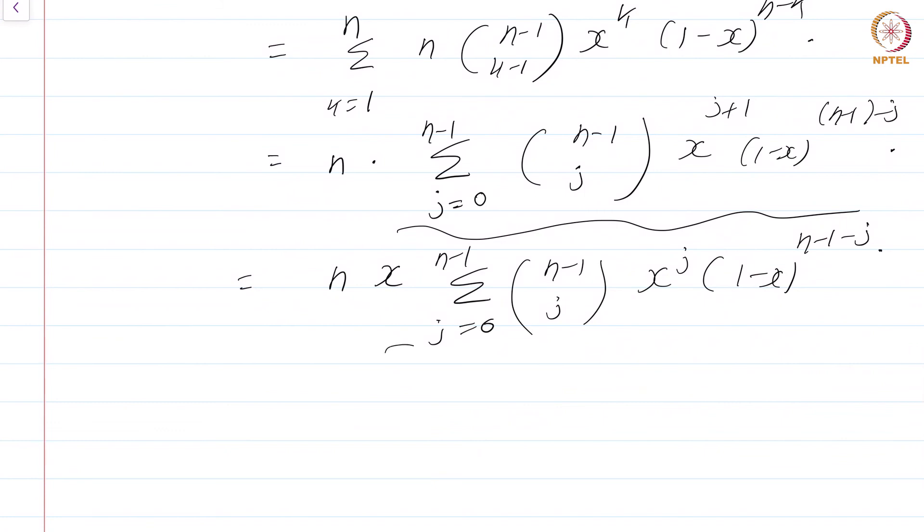Now, this should look very familiar to you from the first part. This is just 1, so this is n x into 1. We are just summing up over all Bernstein polynomials of degree n minus 1 now. So, that sums up to 1, so you get n x into 1 which is n x. That is it. This concludes the proof of identity 2.